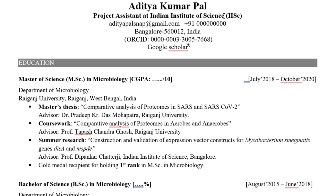After the name, all fonts should be in a similar, consistent format — pick a font size and stick with it. Then mention your current position and institution — for example, if you are a student, write 'Master's student at X University.' Include your email ID, phone number, and your current address. The permanent address is not necessary. Also include your ORCID ID, which is a unique researcher identifier that makes your CV more professional.